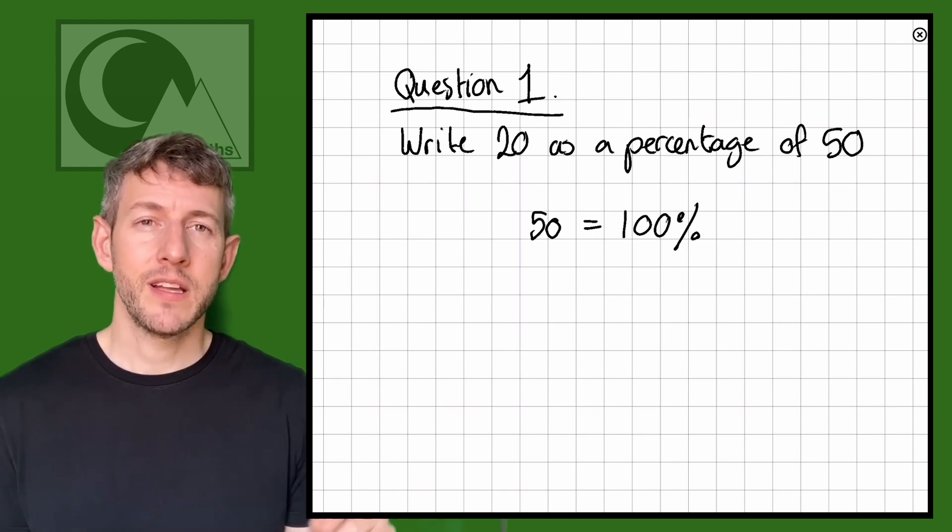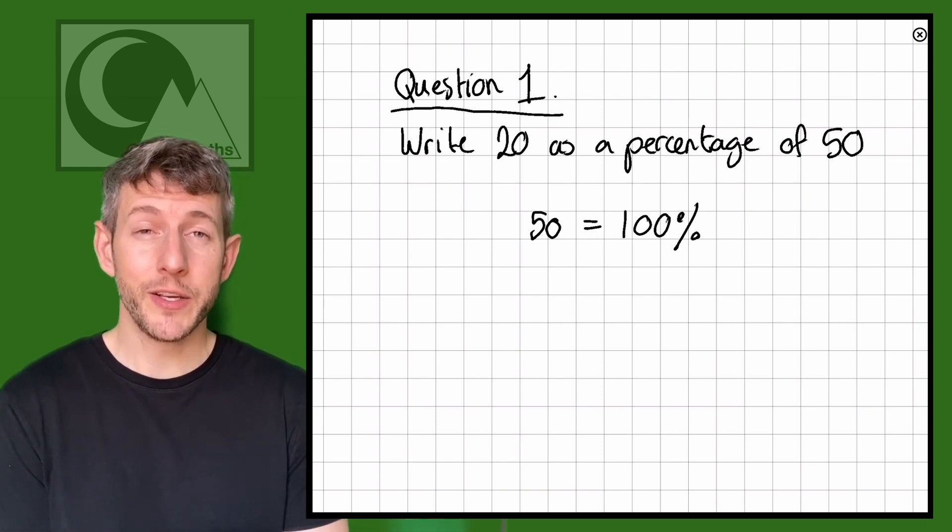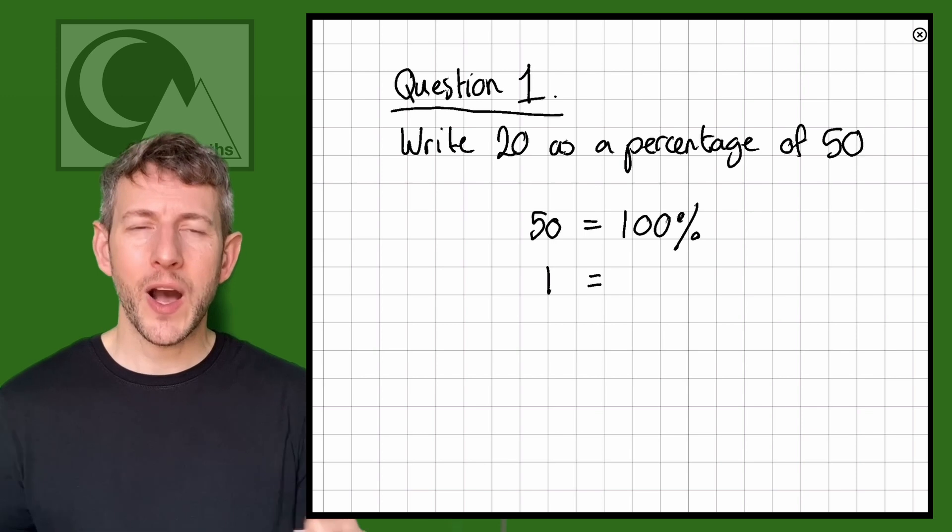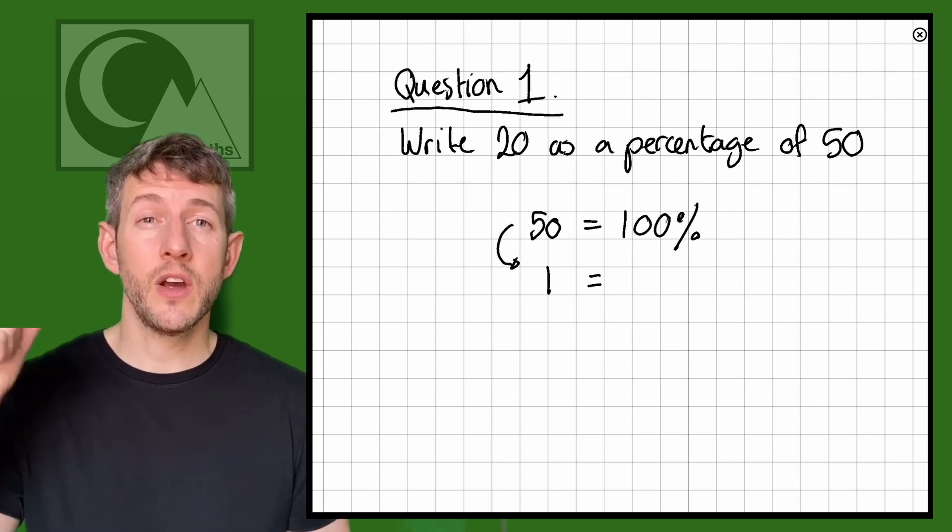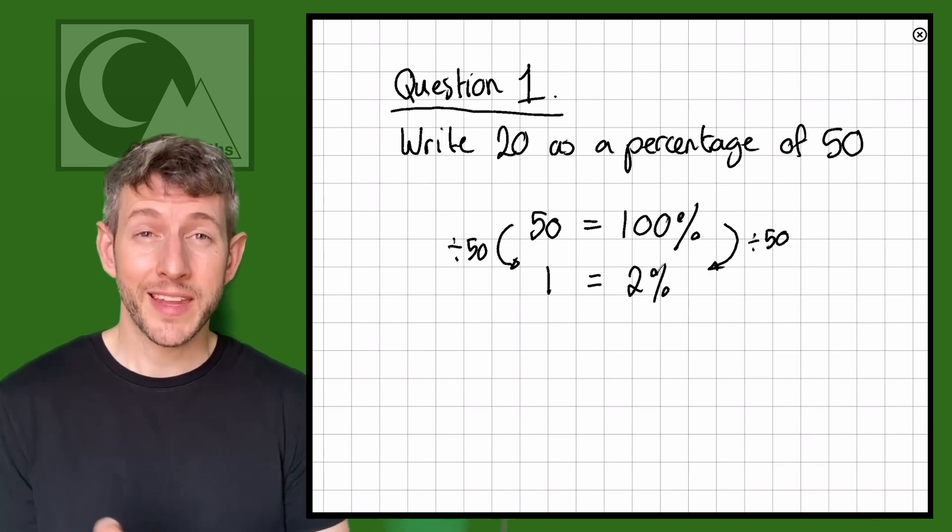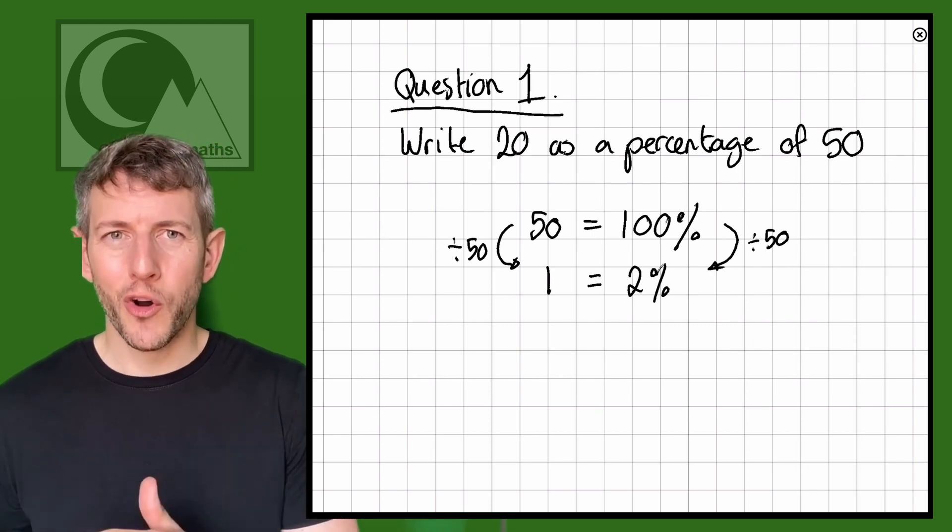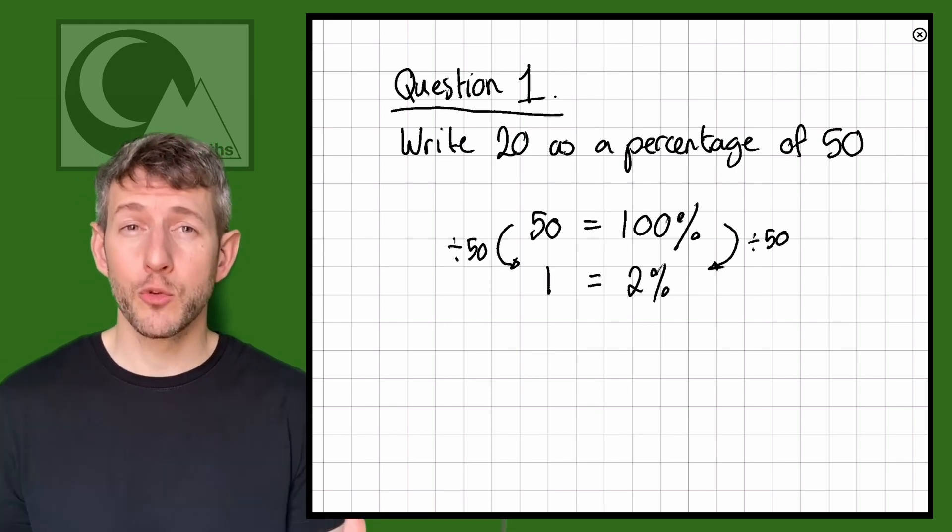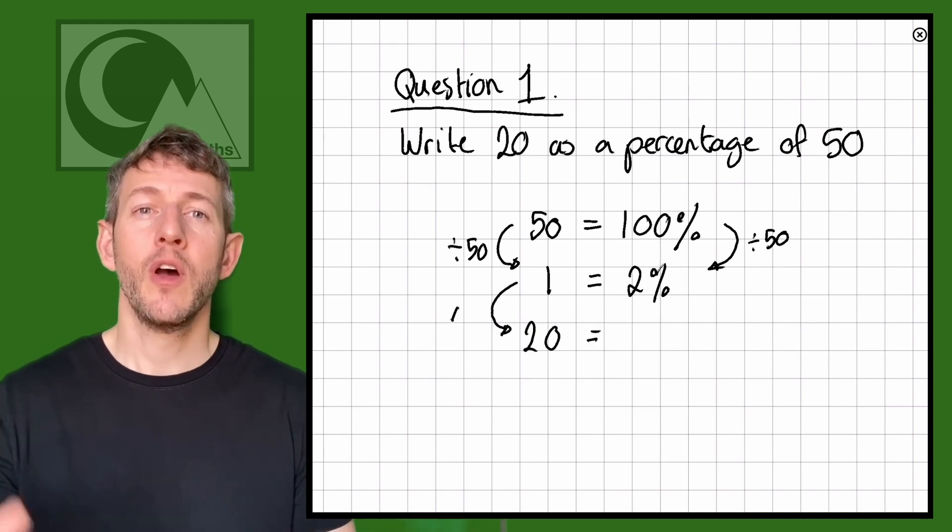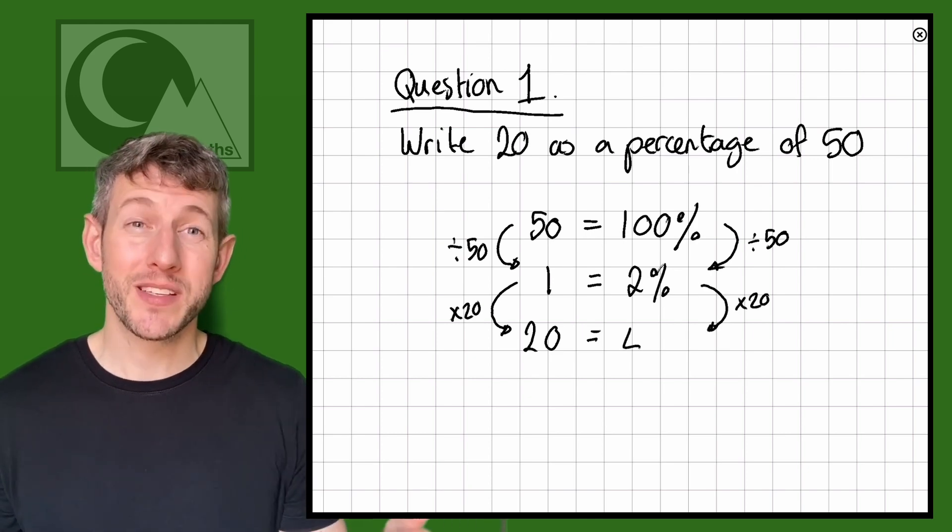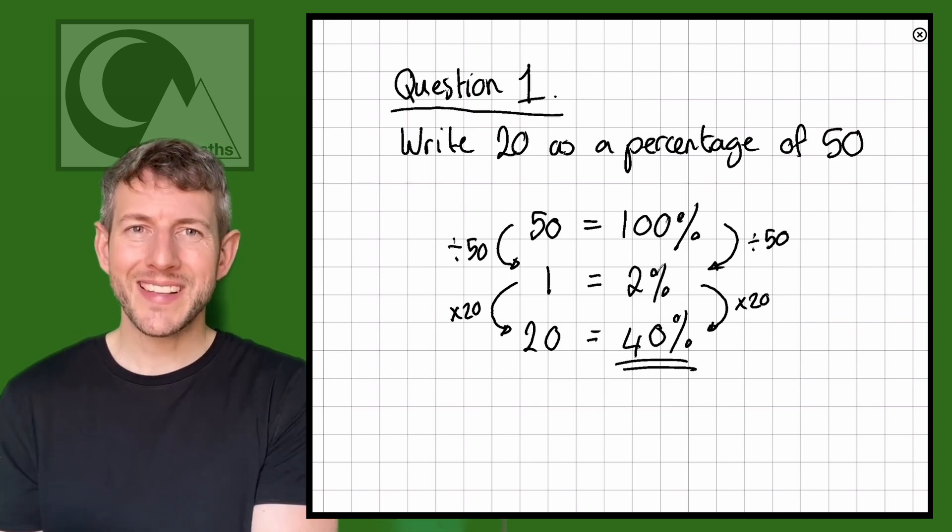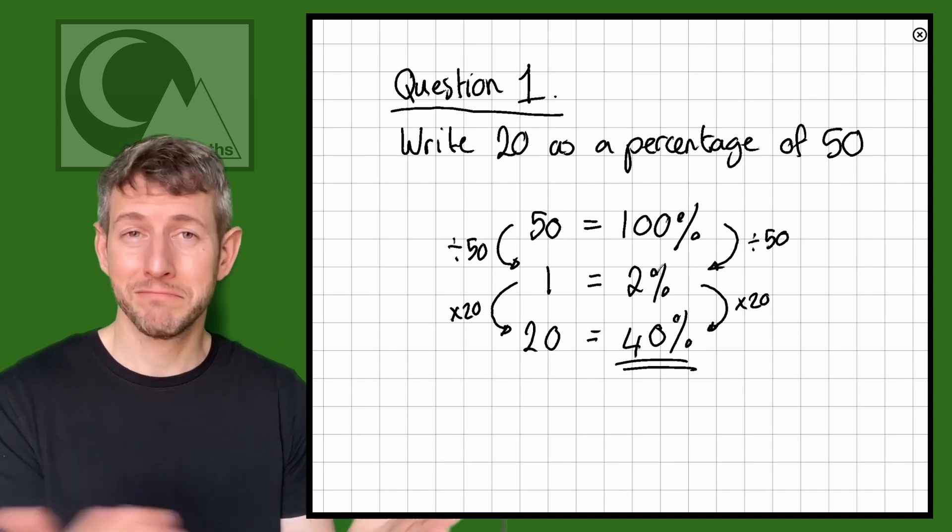So 50 equals 100%. Now what we want to do is we want to go down to find out what one is worth. If 50 is worth 100%, how much is one worth? So to do this we go 50 divided by 50 gives us 1, and we do 100 divided by 50 gives us 2. So we can see here that 1 is worth 2%. Great. Now if 1 is worth 2%, all we can do now is find out how much 20 is worth. So 1 times 20 gives us 20, so 2 times 20 gives us 40. So we can see here that 20 is worth 40%. So there we know 20 is 40% of 50. Perfect.